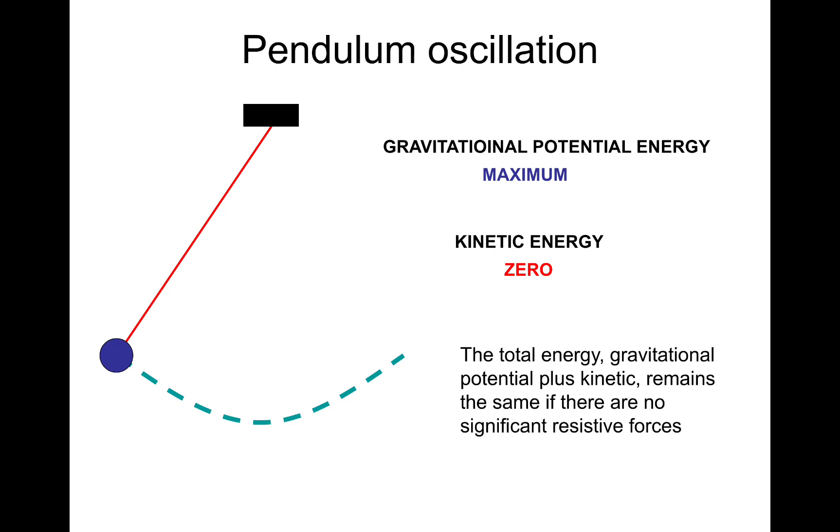However, at all points in time, the total energy, the gravitational potential energy plus the kinetic, remains the same if there is no significant resistive forces. Obviously, in real life, there would be resistance, and if you set a pendulum going, eventually the swings would reduce and then finally stop. But it's a good example of energy transfers, constant transfer of gravitational into kinetic, and kinetic back into gravitational, and then repeating.